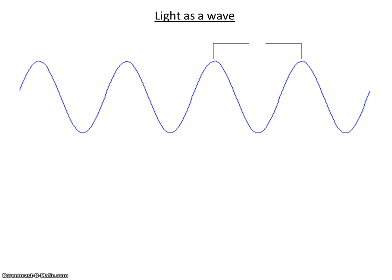This distance here is called the wavelength, and its symbol is the Greek letter lambda. Wavelength is the distance from crest to crest, or from trough to trough.